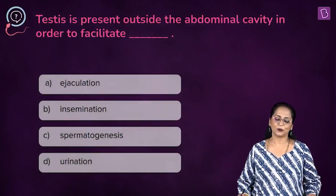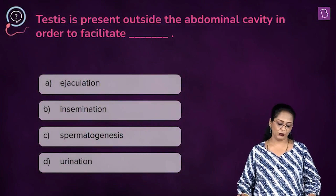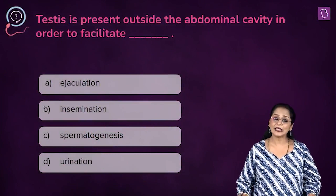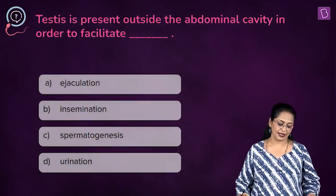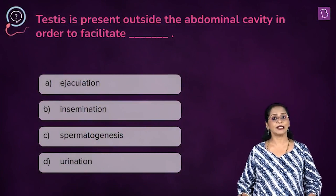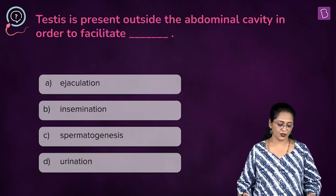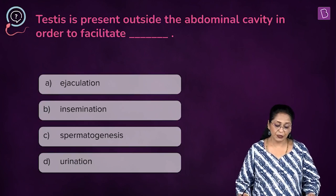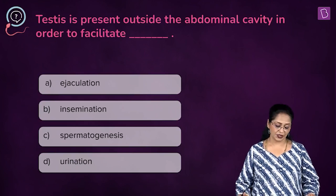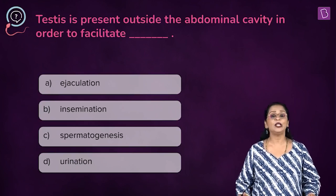Let's look at this fill-in-the-blanks question. Testis is present outside the abdominal cavity in order to facilitate: a. ejaculation, b. insemination, c. spermatogenesis, or d. urination.